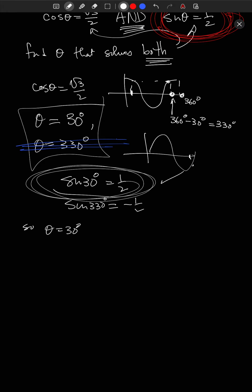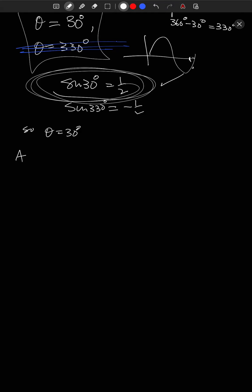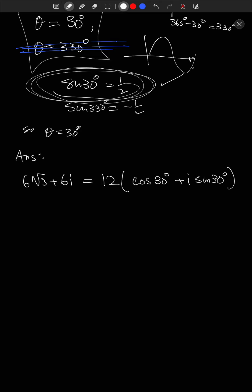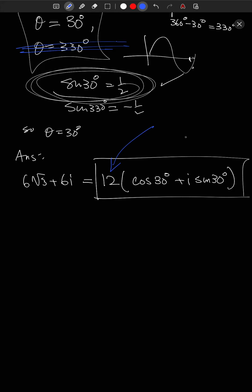So ultimately, 6√3 + 6i = 12(cos(30°) + i sin(30°)). This is the trig form. The important feature is that you can see r = 12 and θ = 30° right in front of your eyes. We think of this as transforming from standard form on the left to trig form on the right.